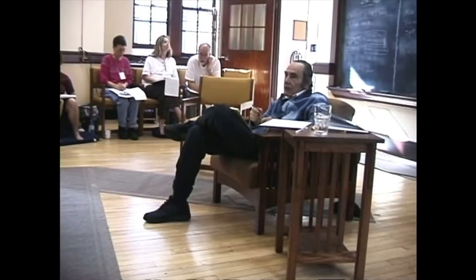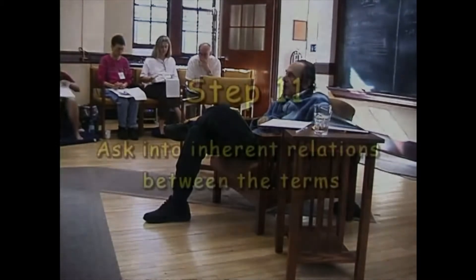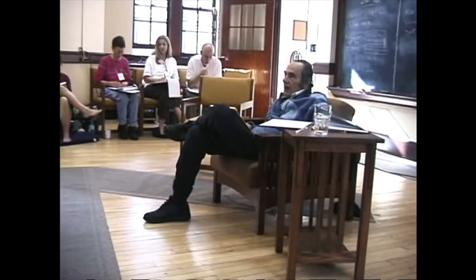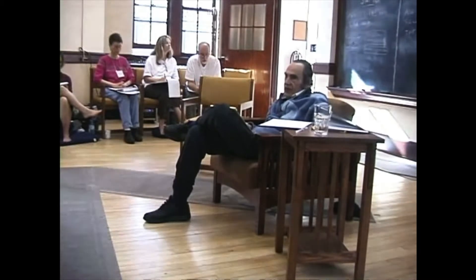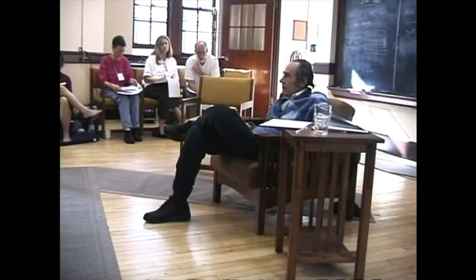In step 11, I find inherent connections. And step 11 is the hard one. So I'm going to say that A is B, and A is C. There are two 'is'-es in this stuff.